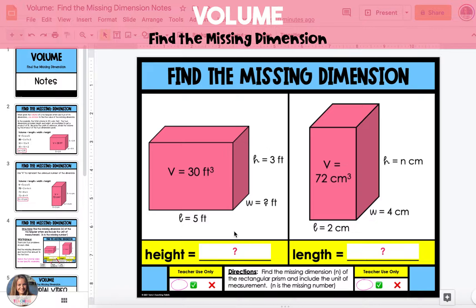In this example, 30 is equal to 5 times n times 3. n stands for the number that we do not know. When we multiply 5 times 3, we have 15 times n. So 30 is equal to 15 times n.